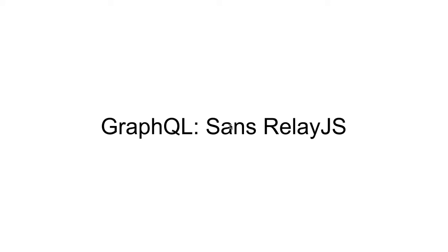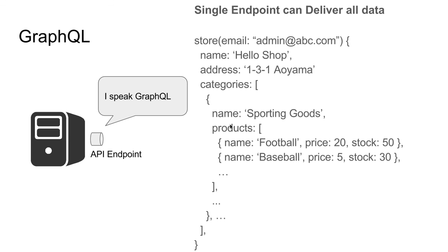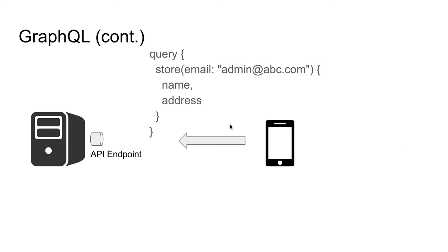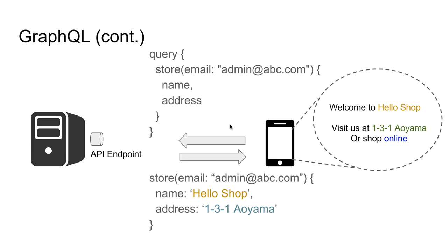GraphQL can be used without RelayJS. GraphQL is just a server that speaks GraphQL and has a single endpoint. The single endpoint is capable of delivering all your data, but all the data that you want to deliver must be declared beforehand using a schema. A client can request for a piece of data — for instance, the name and address of a store — and the GraphQL server will return exactly the name and address of that store, enabling your ReactJS component to display the data.